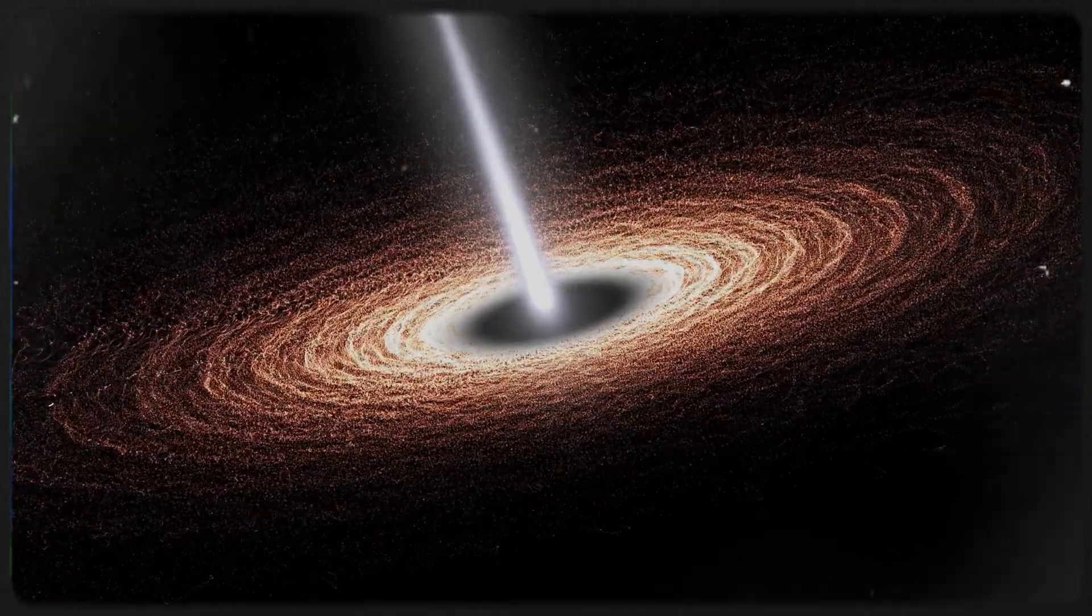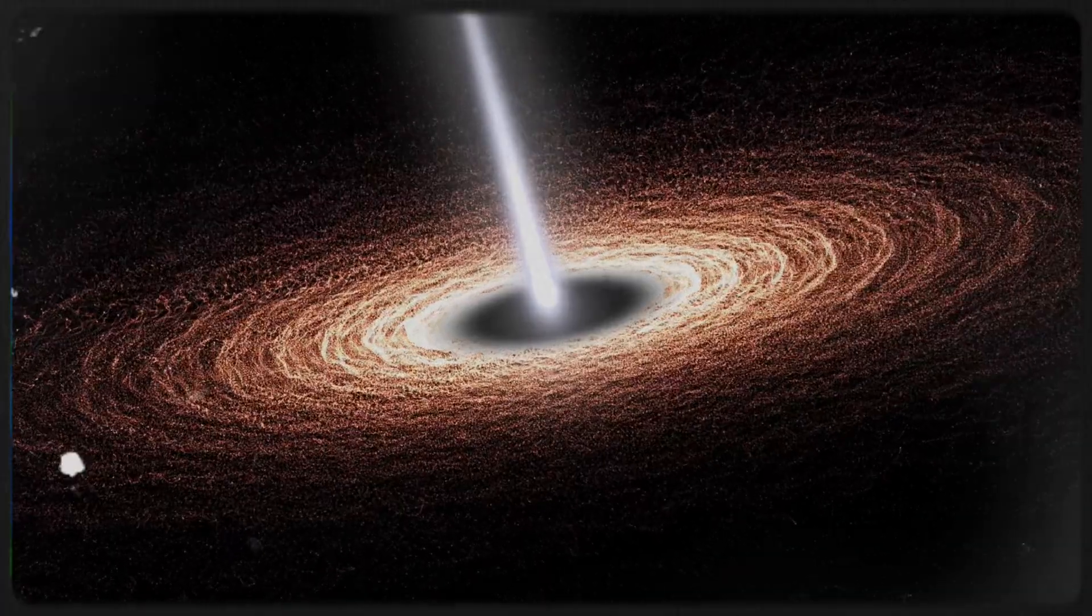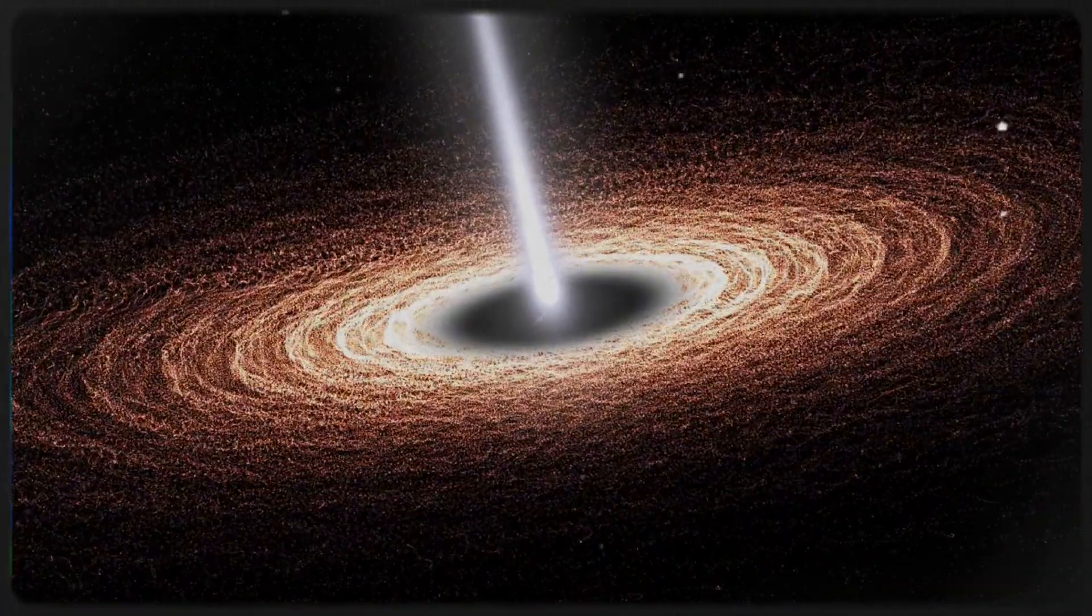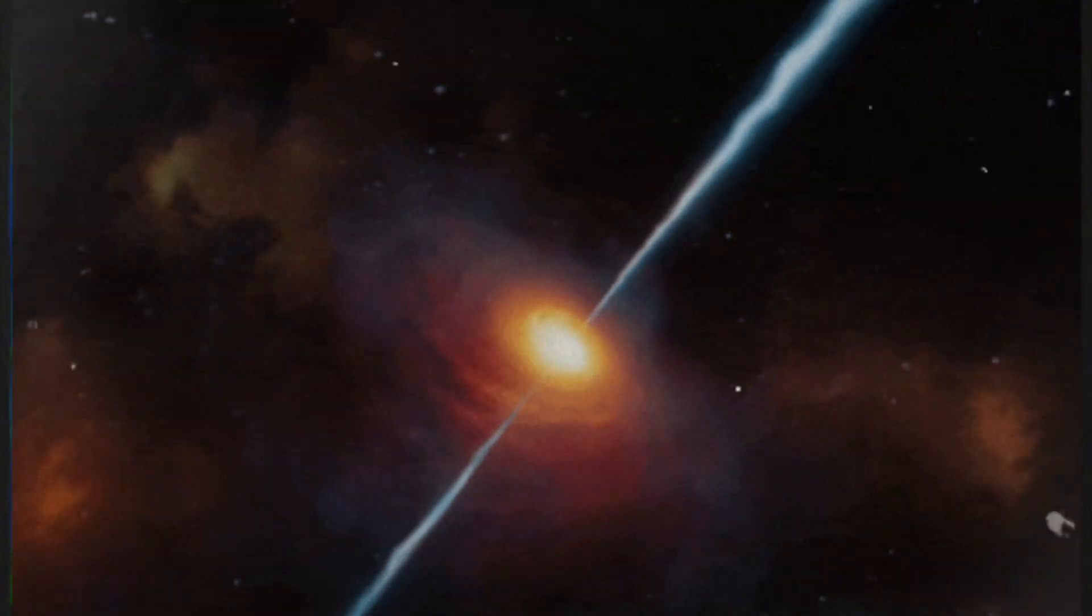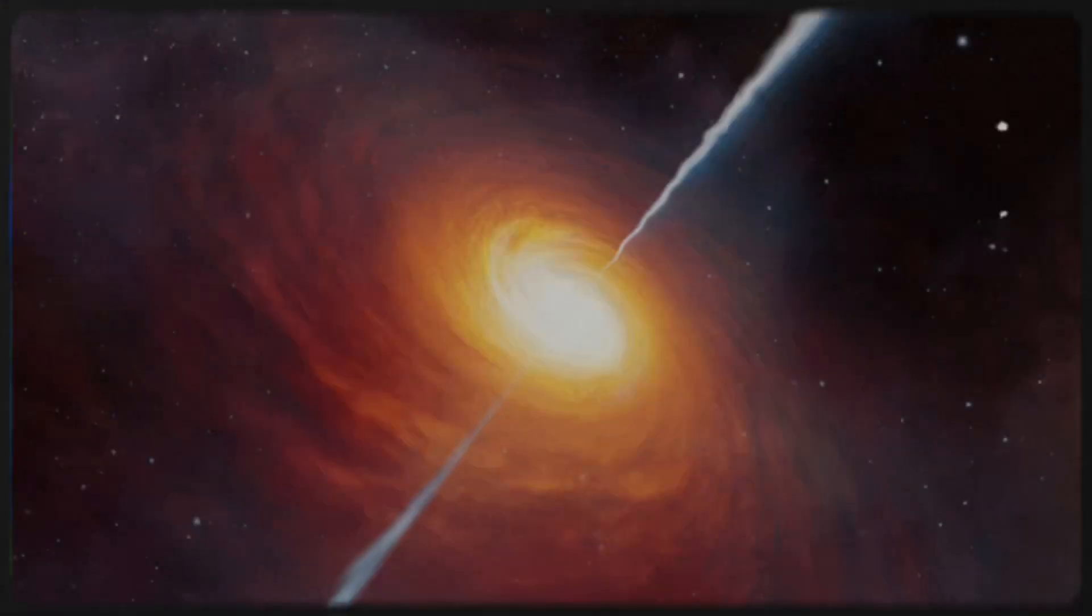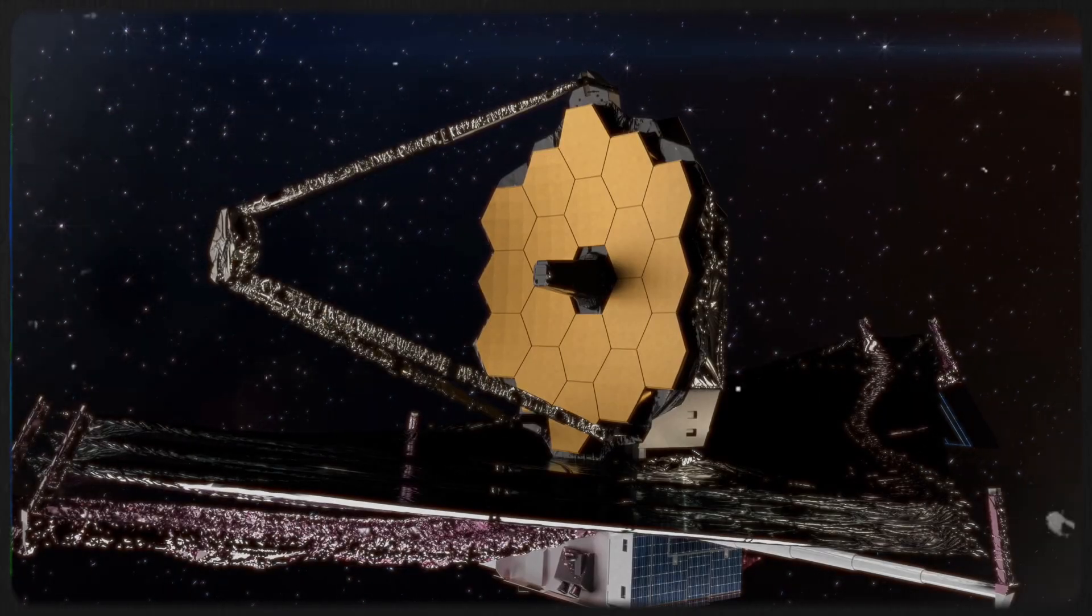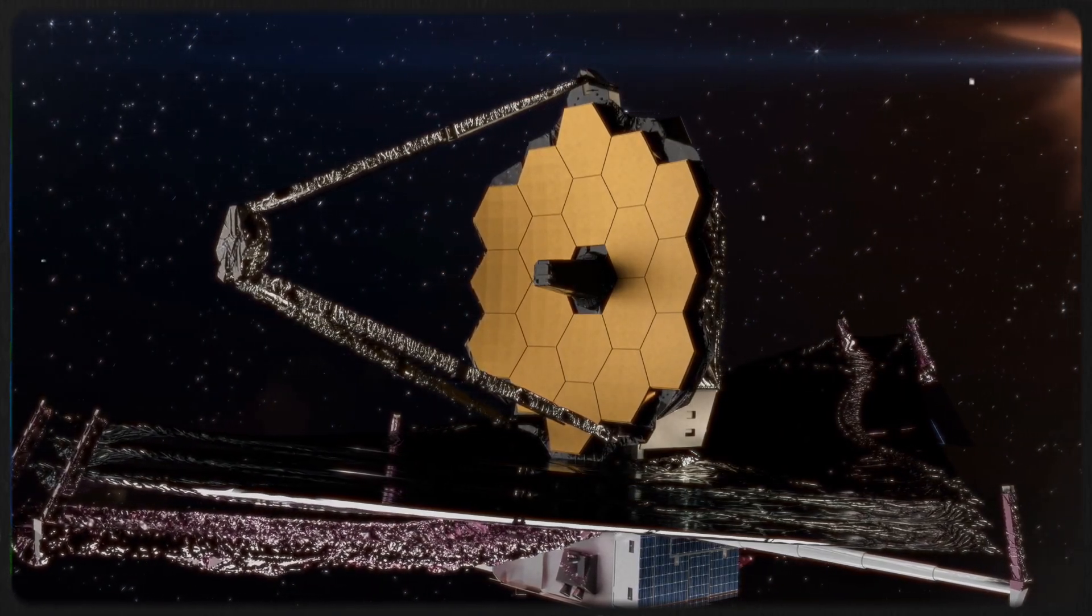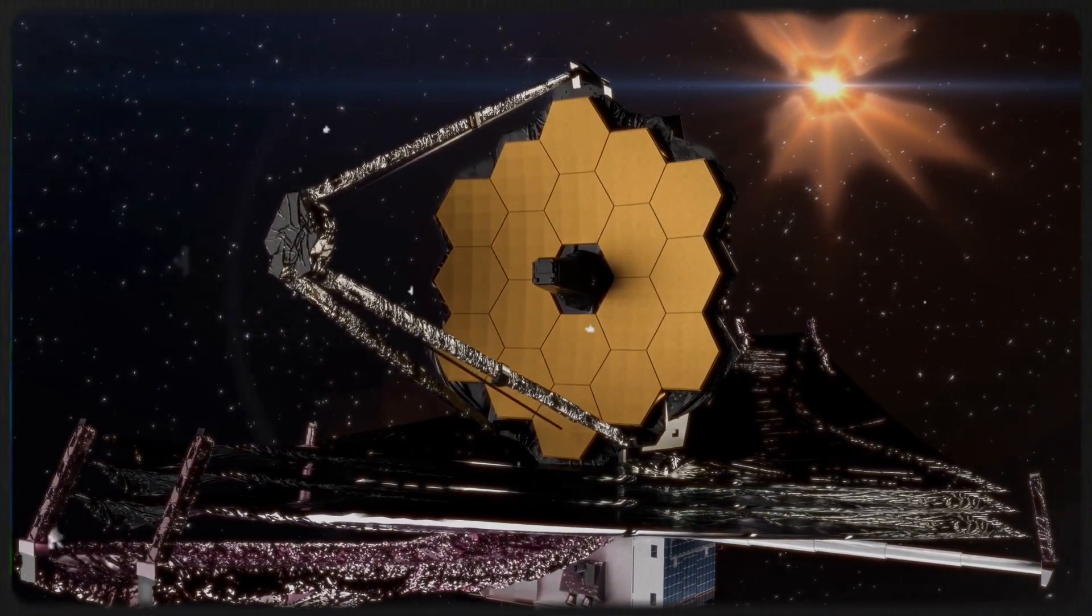Scientists are still puzzling over how such massive black holes formed so early. Telescopes detect these black holes because the material falling into them heats up from friction, creating bright emissions known as active galactic nuclei. Quasars, the most intense AGN, are billions of times heavier than the Sun and emit light billions of times brighter than the brightest stars. As Webb observes deeper into the universe, it captures light from these distant objects, revealing earlier epochs of cosmic history.